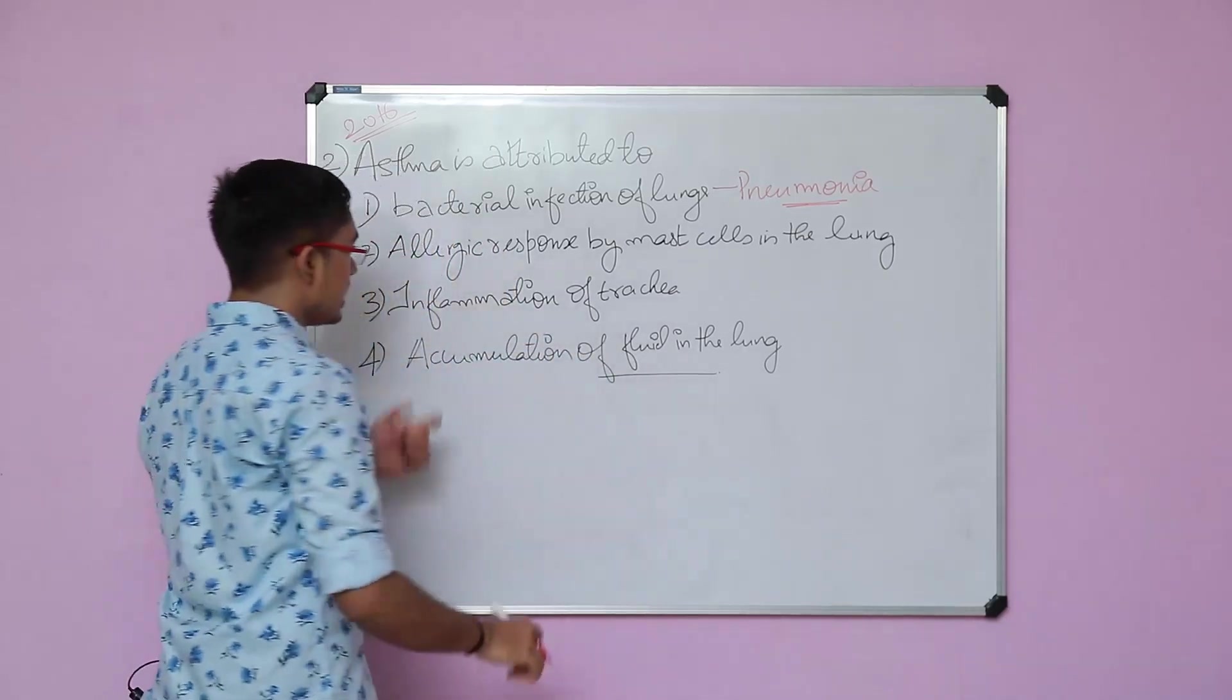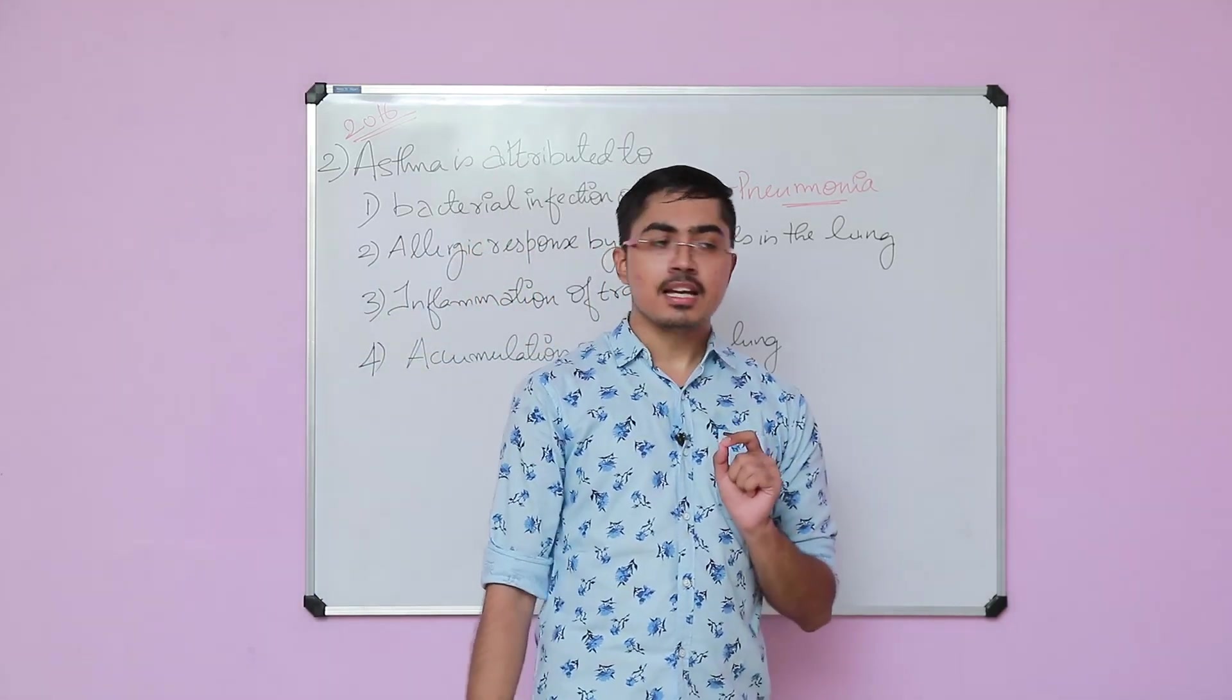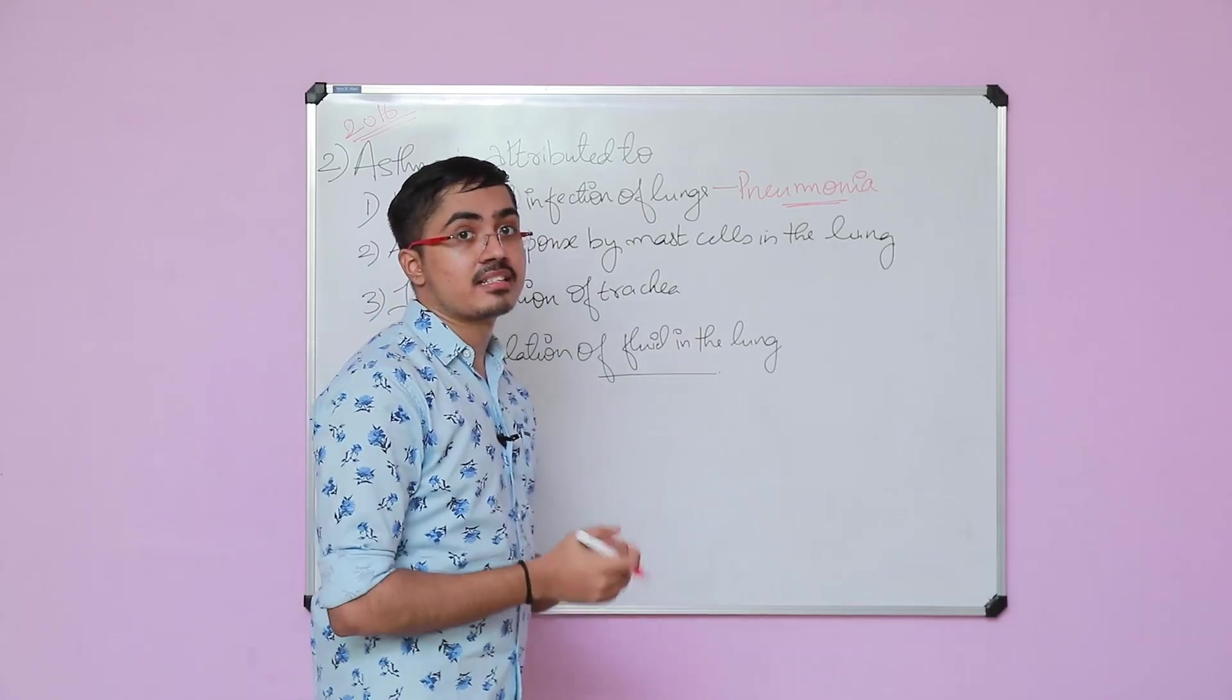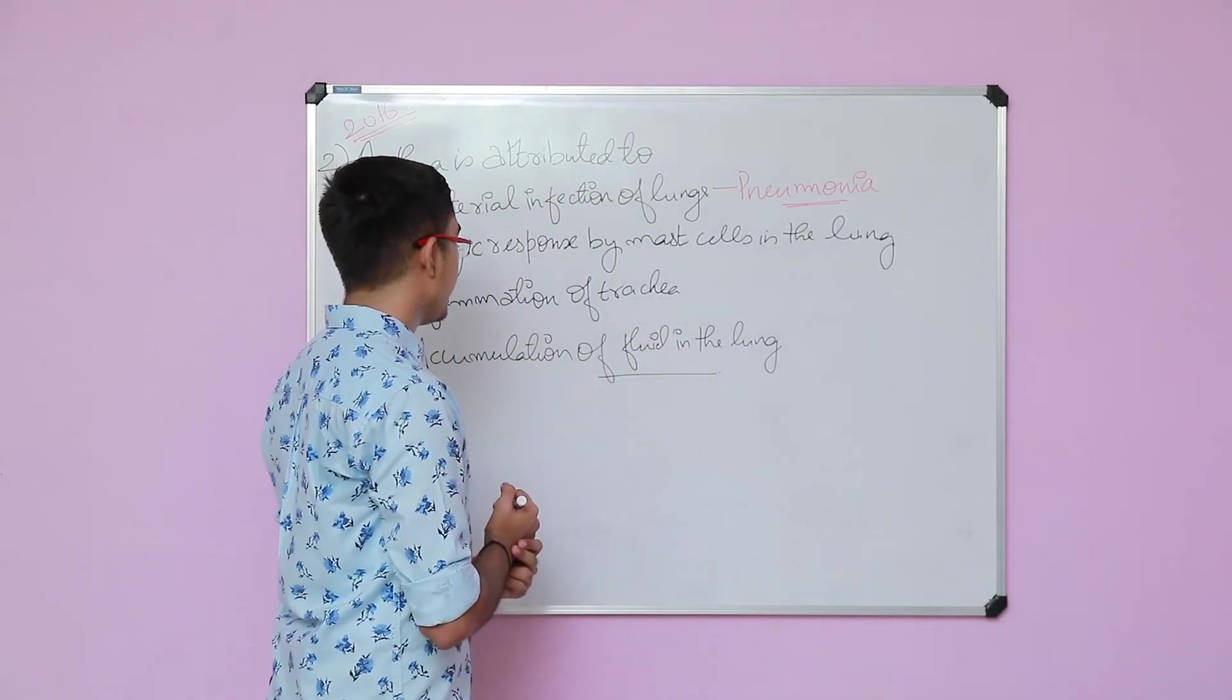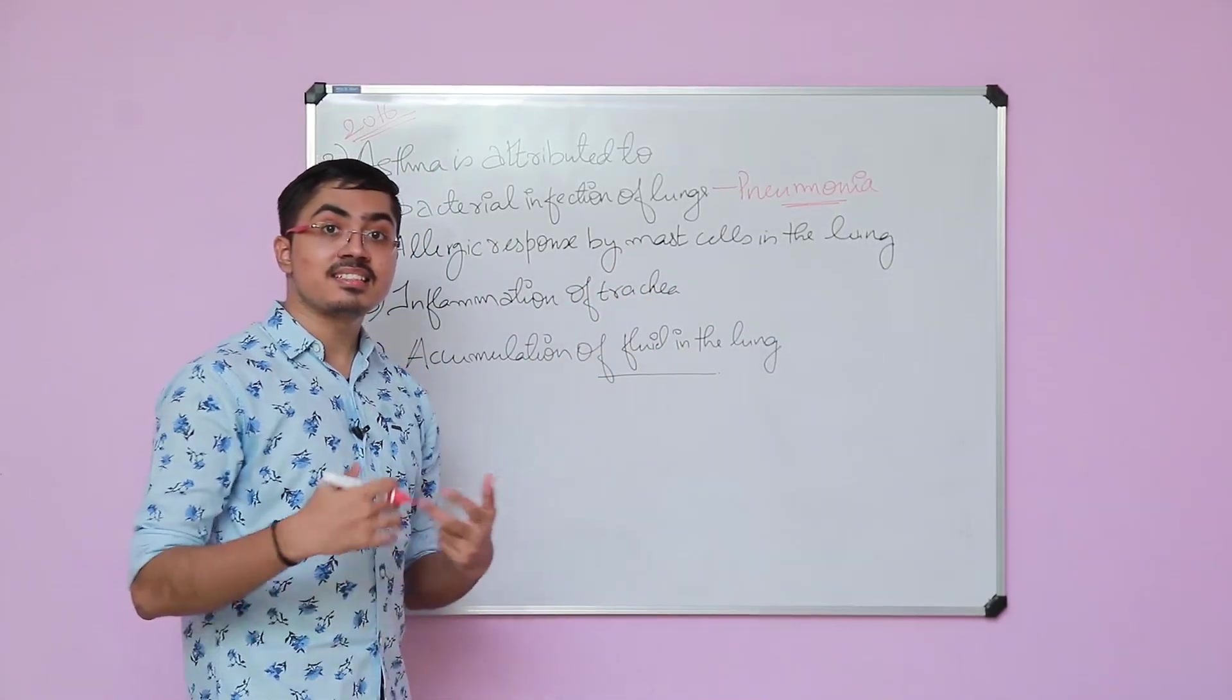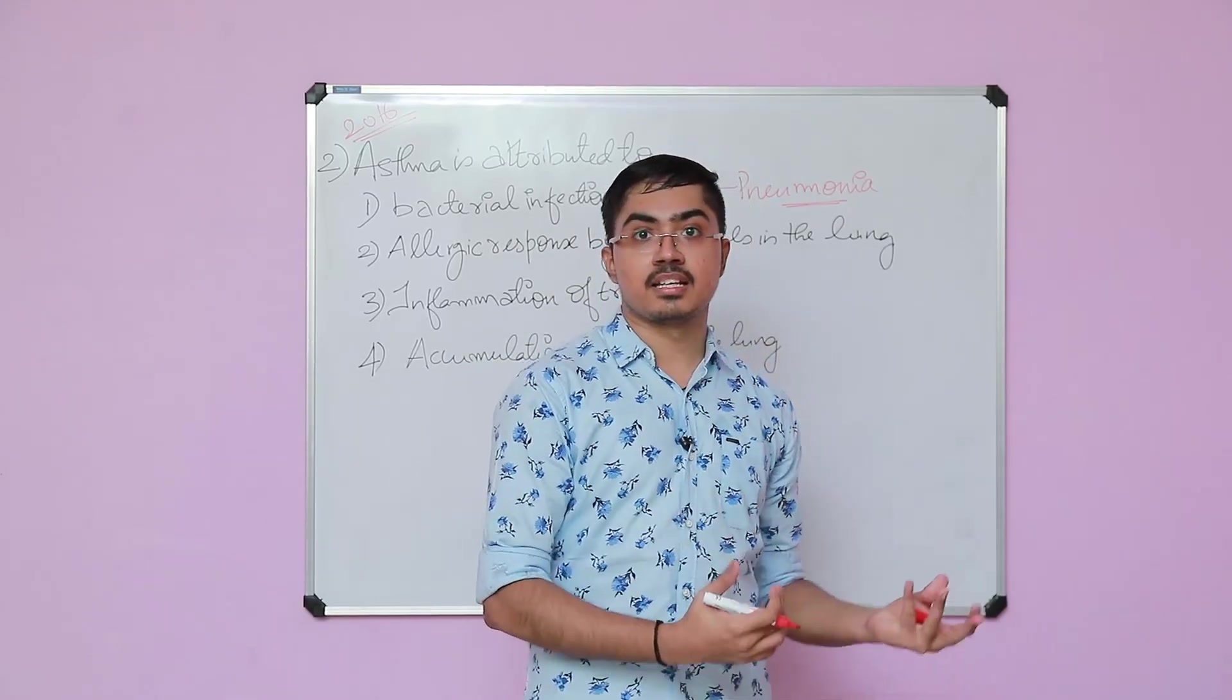The third option is inflammation of trachea. Is this a part of asthma? Maybe it is a part of asthma, yes. The airway or conducting part of the respiratory system is also involved in asthma. But let's look for a more basic option. That is allergic response by mast cells in the lungs. Does that sound much better than the third option? Yes, that sounds much better.